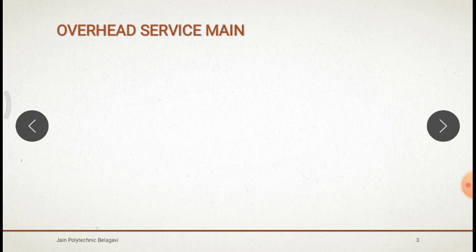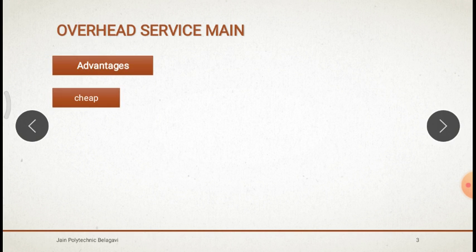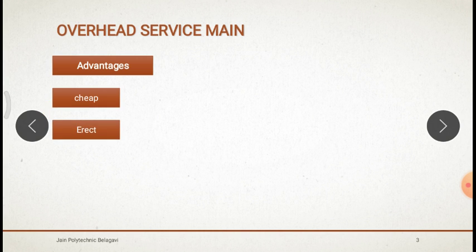First, Overhead Servicemail. The advantages of Overhead Servicemail: first, it is cheap — means less cost — compared to Underground Servicemail. So two types of servicemails are there: Overhead and Underground. Compared to Underground Servicemail, Overhead Servicemail is cheap. And it is easy to erect. Erection means installation. In electrical terminology, for installation of substations, transformers, or any overhead or underground servicemail, the word used is 'erection.' So it is easy to erect compared to Underground Servicemail.